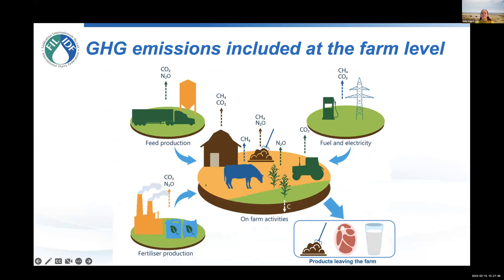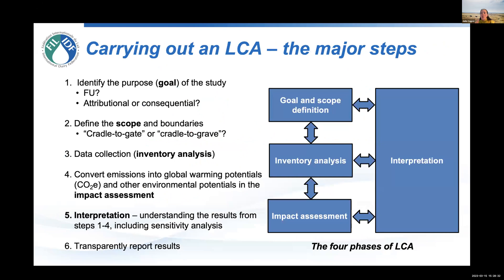In terms of the greenhouse gas emissions at the farm level, these basically comprise carbon dioxide (CO2), nitrous oxide (N2O), and methane (CH4). As you can see from this diagram, they come from various sources. We have methane and nitrous oxide from cattle wastes; methane and carbon dioxide from cattle housing; carbon dioxide in terms of fuel combustion from tractors, transport, and processing. And we've got some products leaving the farm as well in terms of waste, meat, and milk. So we've got to take into account all of the impacts of all of these processes within that chain, depending on the scope of our study.